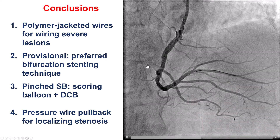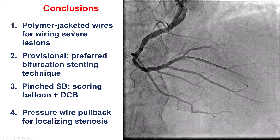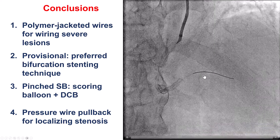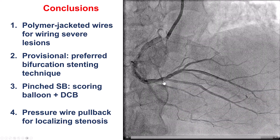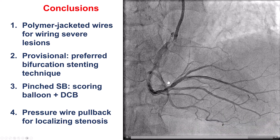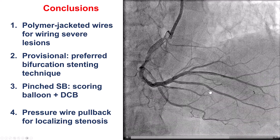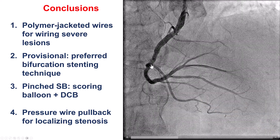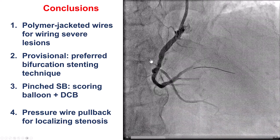To summarize, this case provides several lessons. First, when there is a highly stenotic lesion, polymer-jacketed wires or a microcatheter may be needed to cross them — here those lesions were crossed with a Sion Black wire. Second, this was a Medina 011 bifurcation, and provisional stenting remains the preferred technique; a pinched PDA ostium was treated with a scoring balloon and a drug-coated balloon with a nice final result. Finally, the pressure wire was extremely useful, showing no pressure gradient across the PDA but a significant gradient across an eccentric lesion in the proximal to mid-RCA, which was successfully stented with an excellent final result.